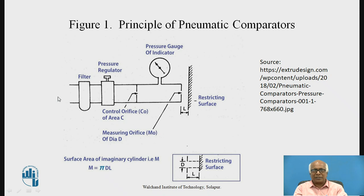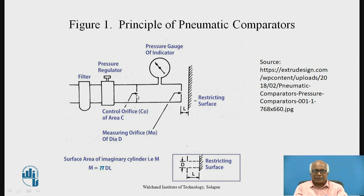Compressed air comes through the filter. There is a pressure regulator unit — filter and pressure regulator units are common for any pneumatic system. There is a control orifice, named CO with area C. This is a chamber whose pressure can be measured with the pneumatic gauge. There is one more orifice — the measuring orifice — through which the measuring jet emerges and air goes to the atmosphere. The distance between the restricting surface and the measuring orifice MO is designated by L.